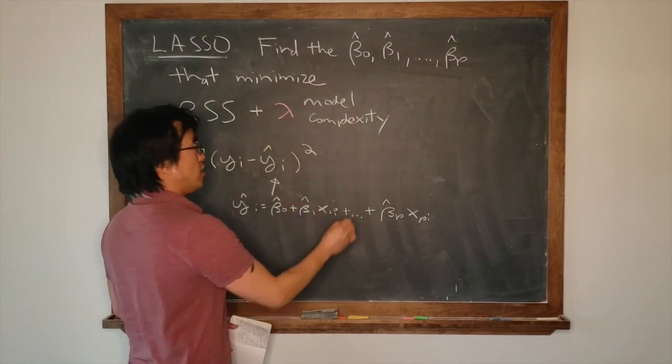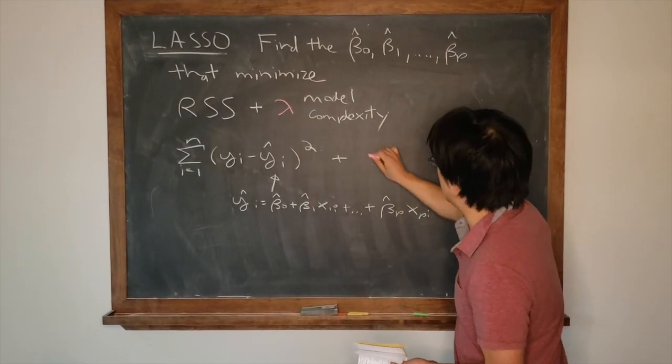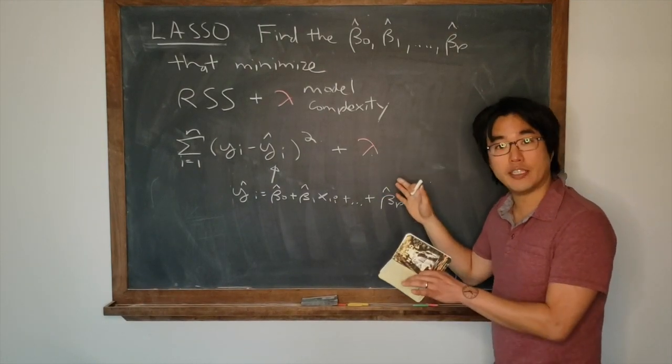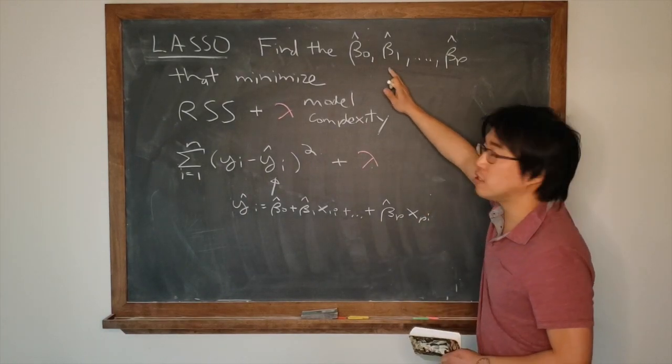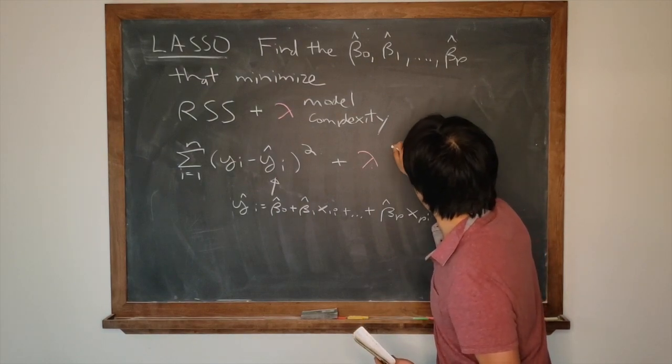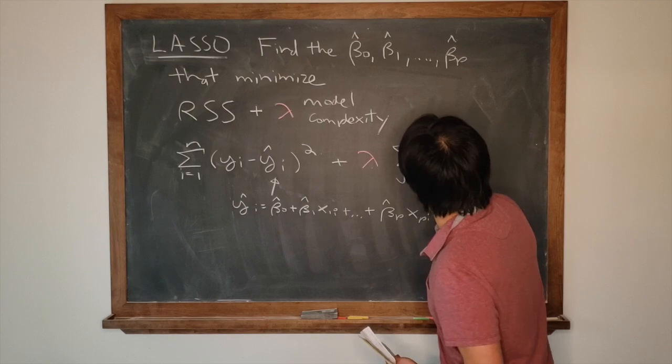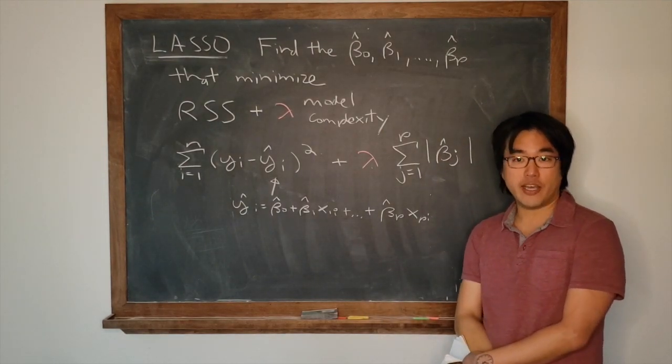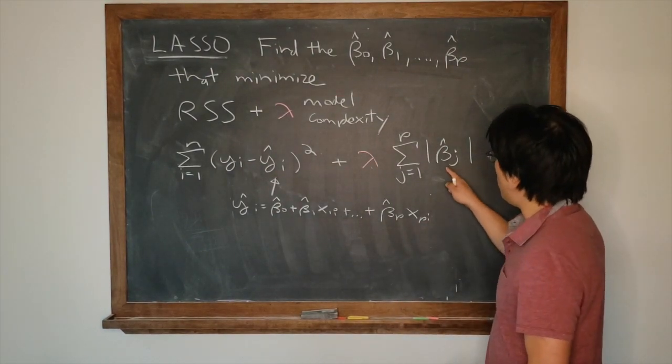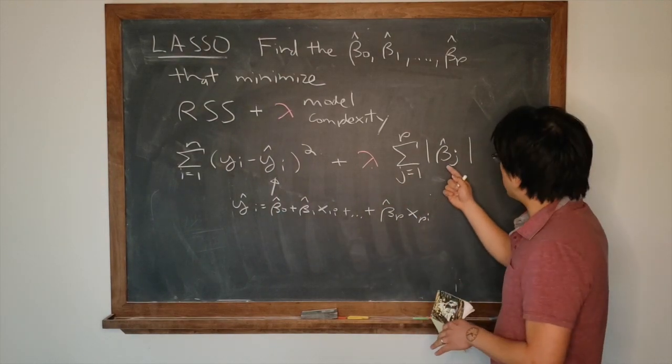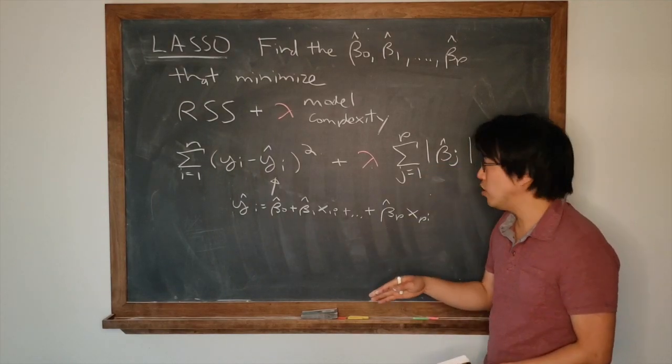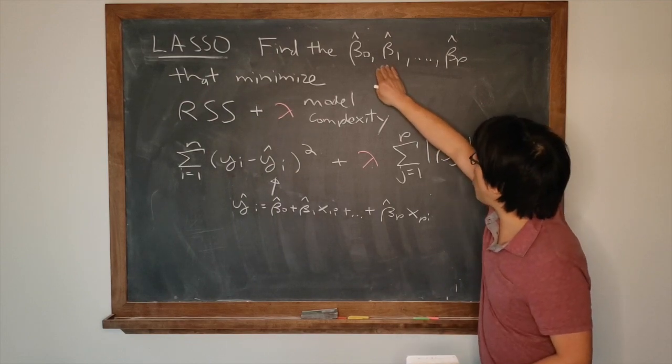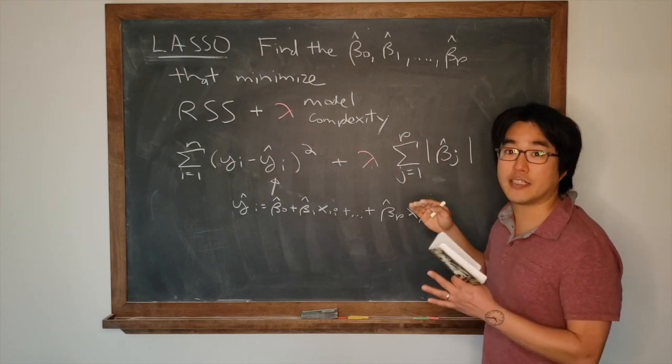But now, what is our measure of model complexity here? It's not a tree, so it's not the number of leaves. But rather, it's lambda times the sum from j equals one to p of absolute value of beta_j's. Remember folks, that's where the shrinkage happens. Certain of the beta hats would go to zero. If all the beta hats are zero, you've dropped all the predictors from your model, and you therefore have the simplest possible model.